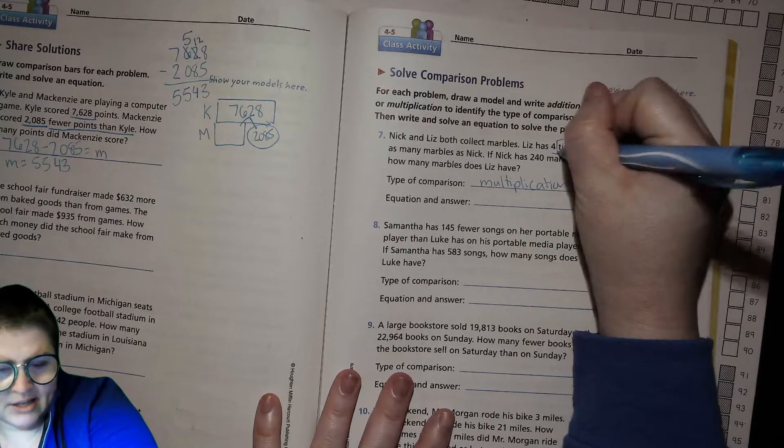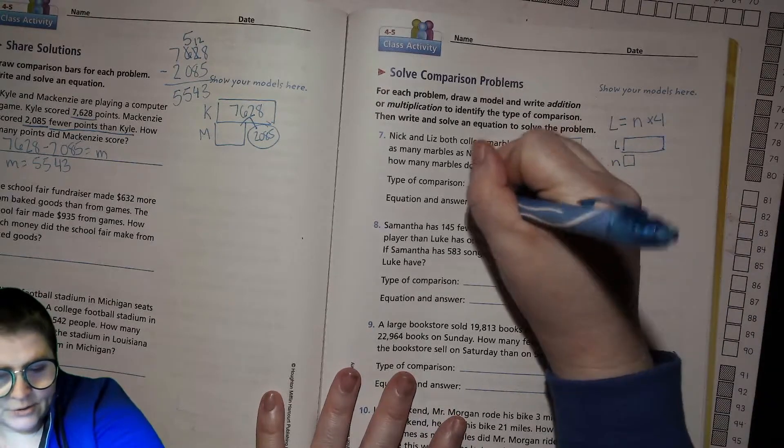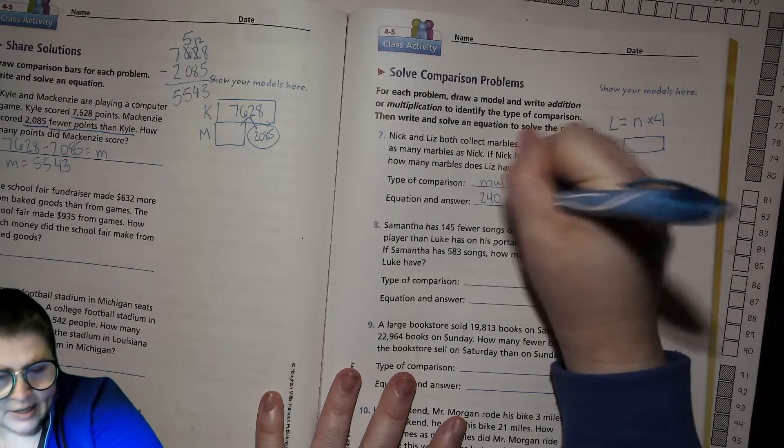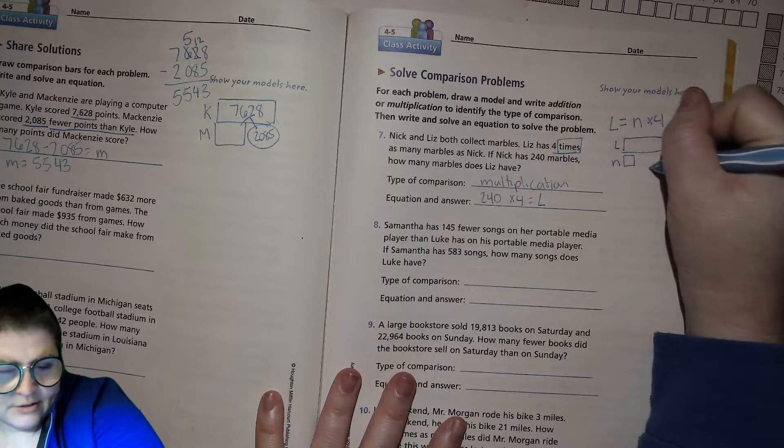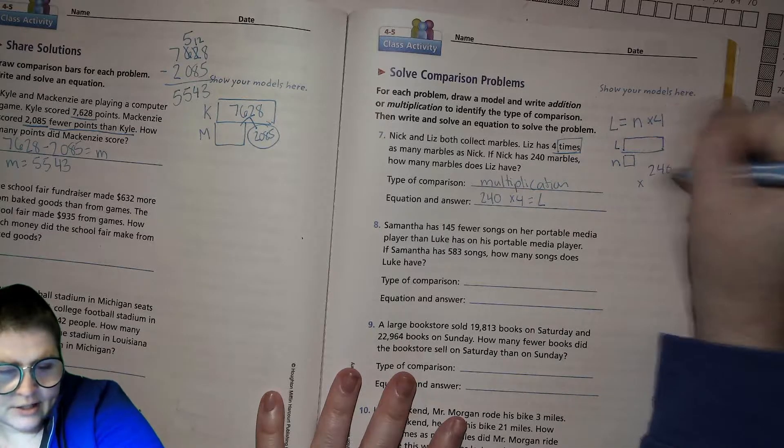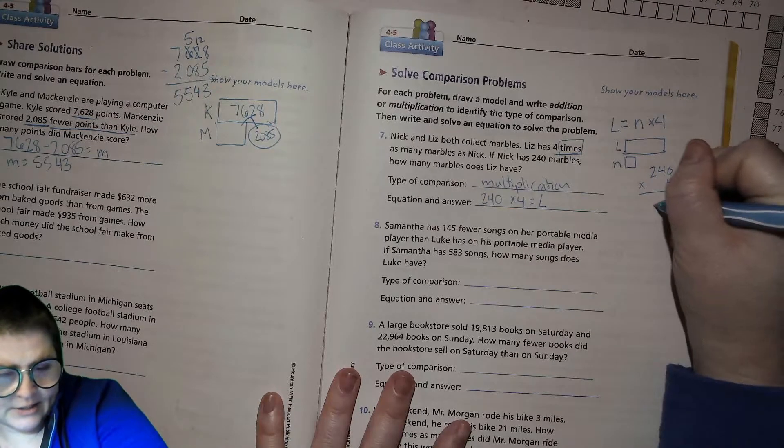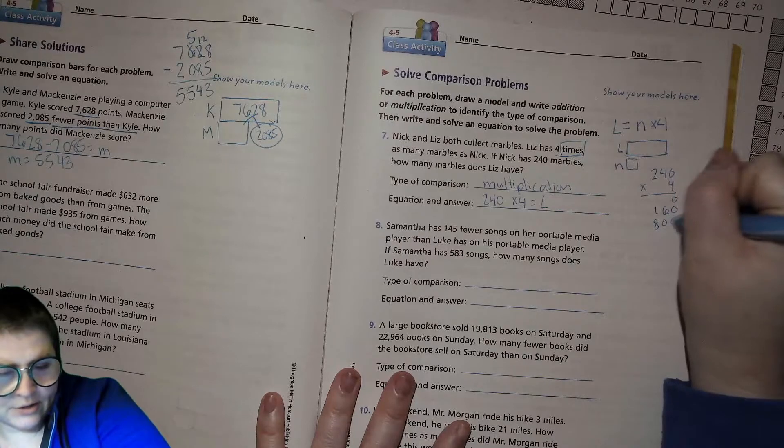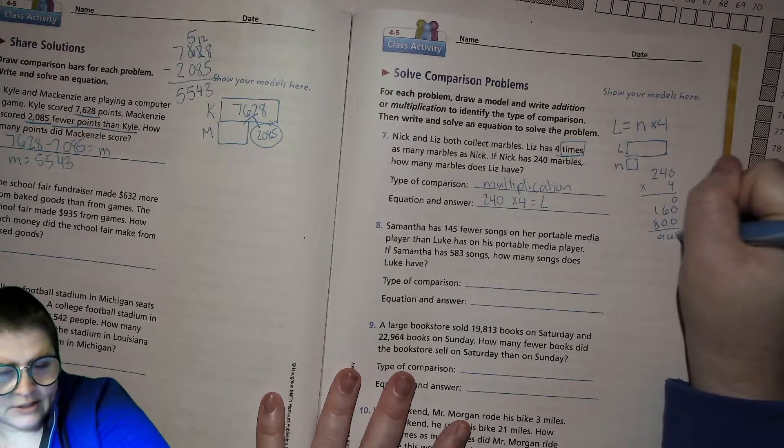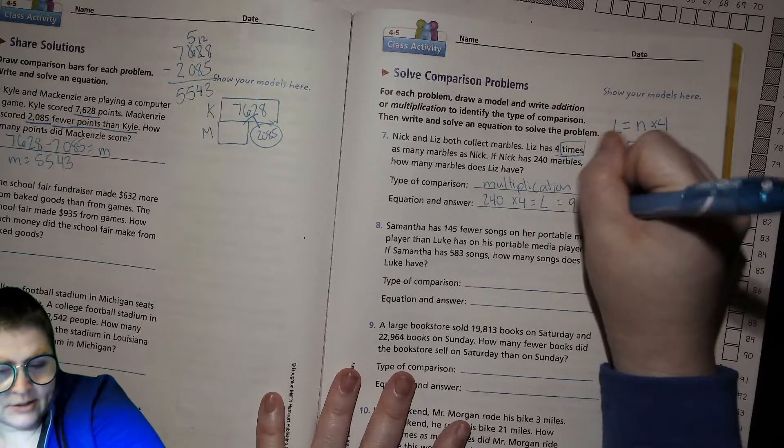That 'times' was the big hint there. So it is Nick's amount, 240, times 4, and that equals L. 240 times 4: 4 times 0 is 0, 4 times 40 is 160, and 4 times 200 is 800, which gives us 960. So L equals 960 marbles.